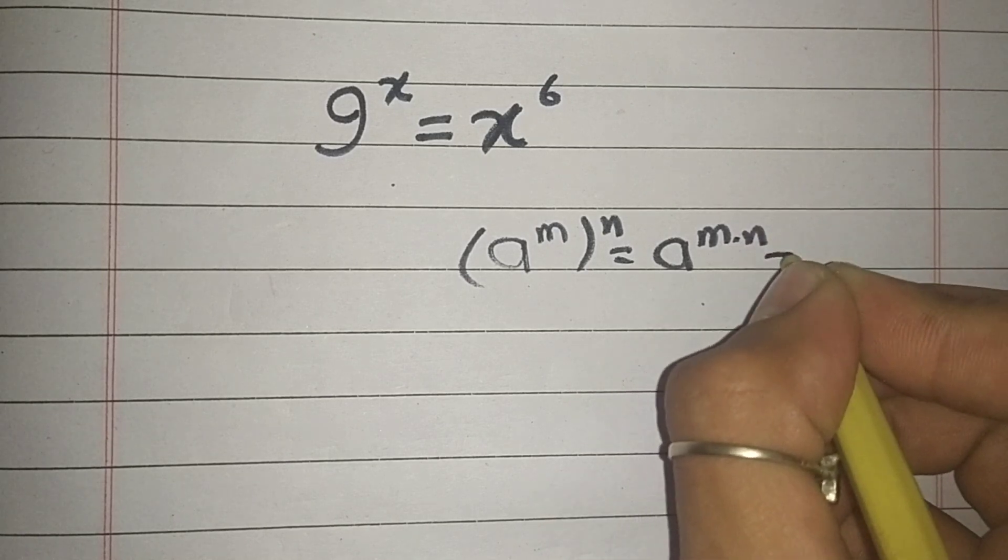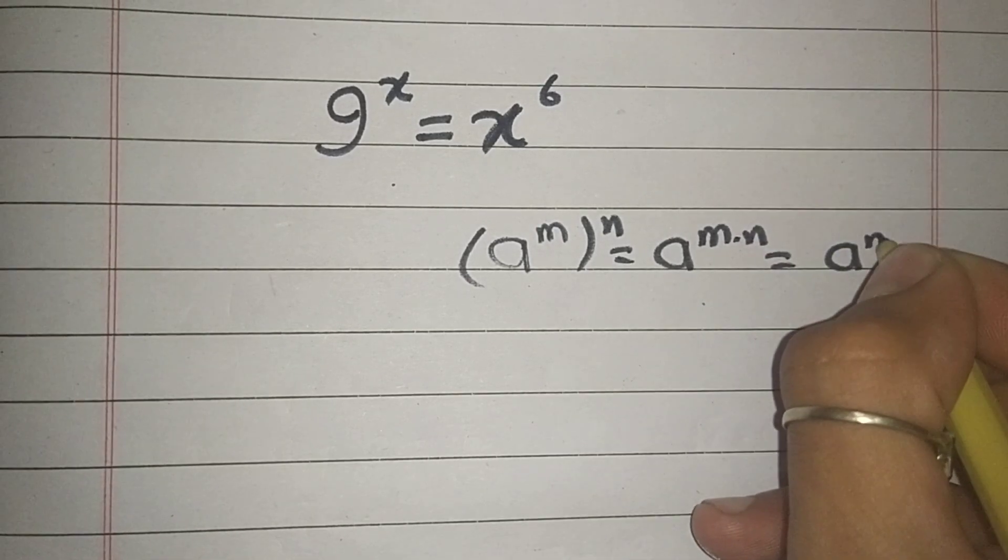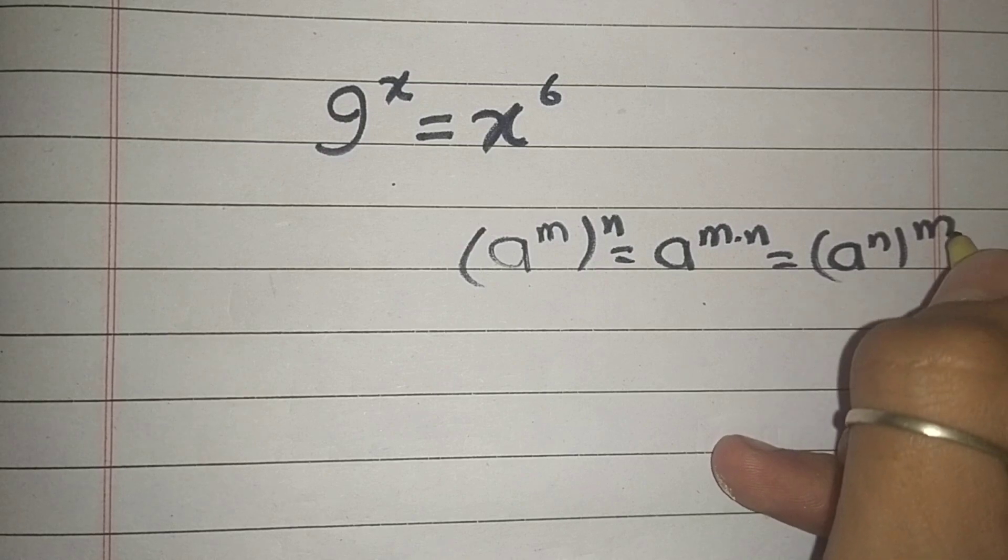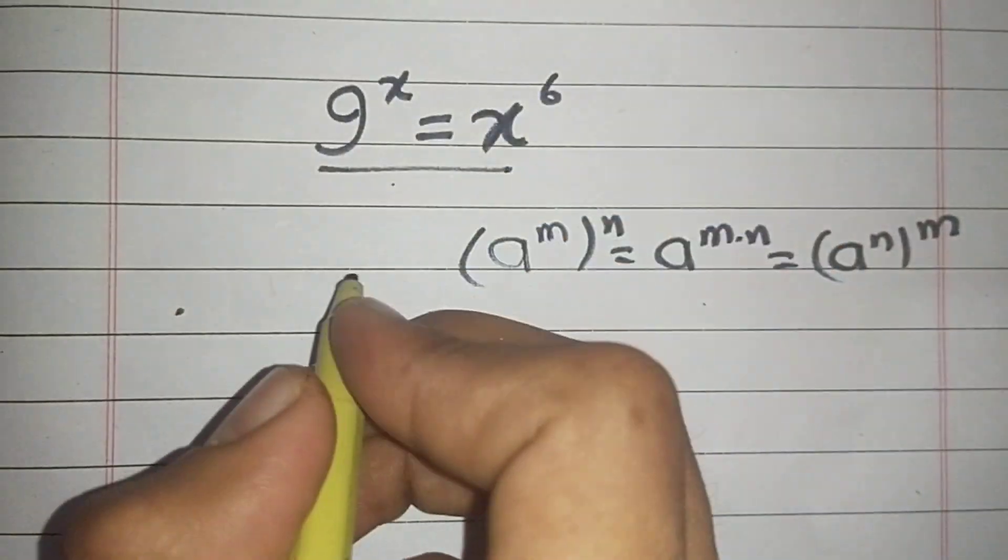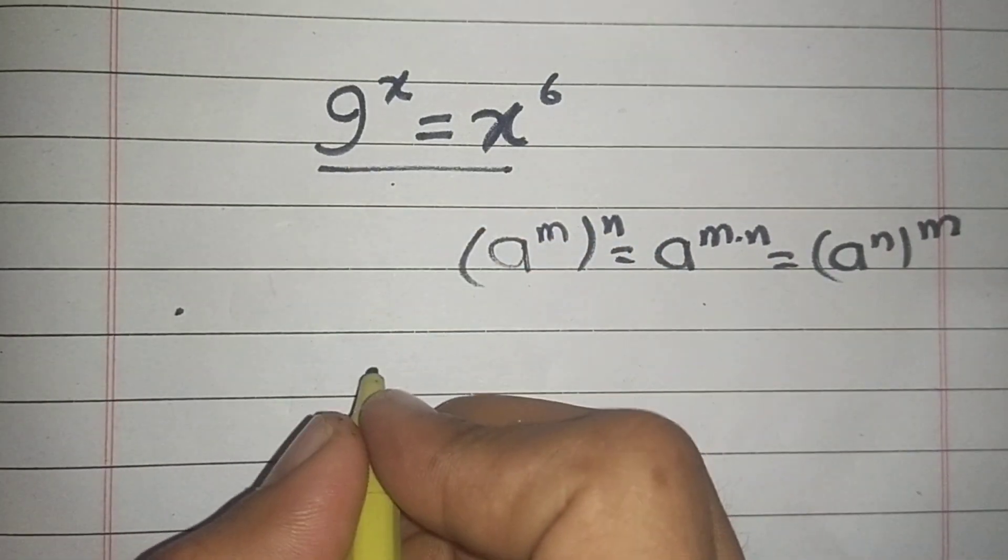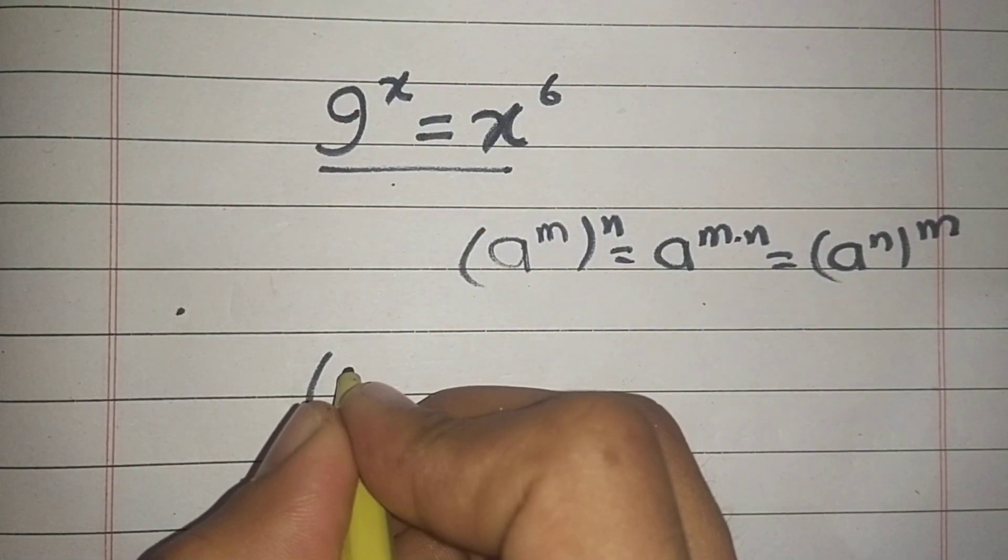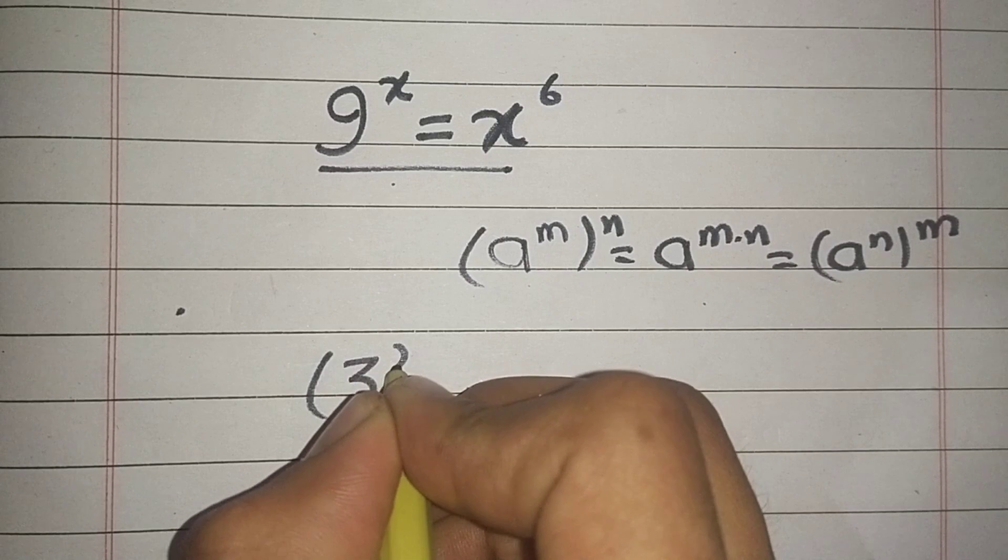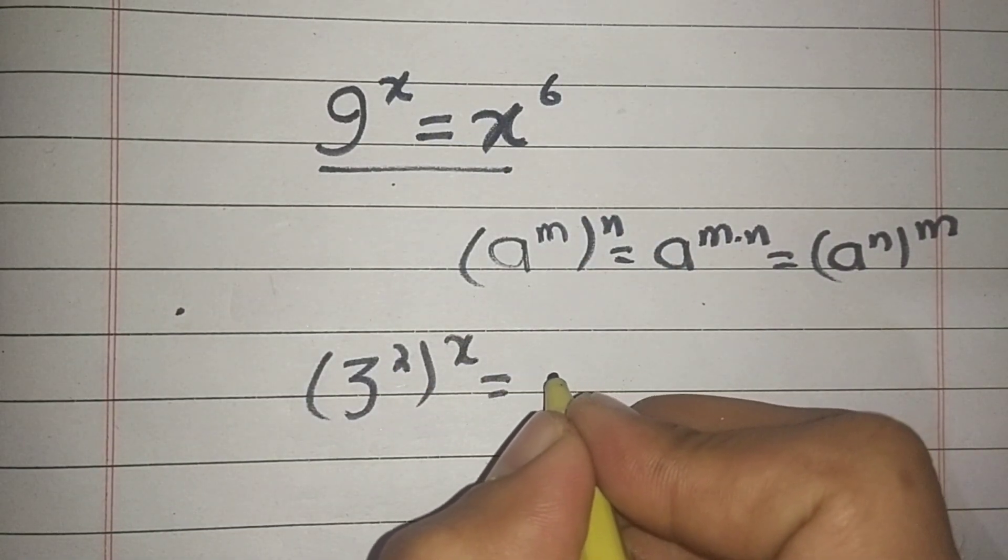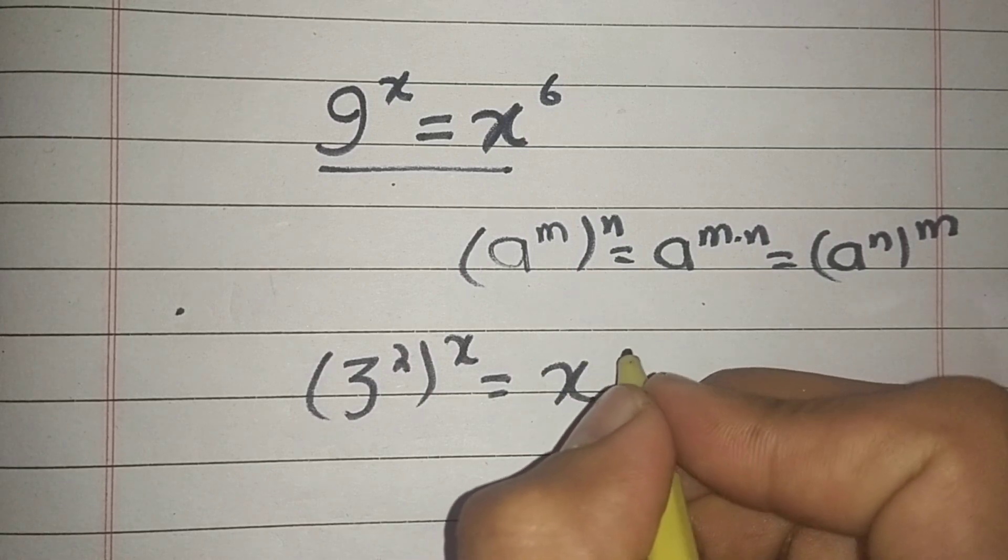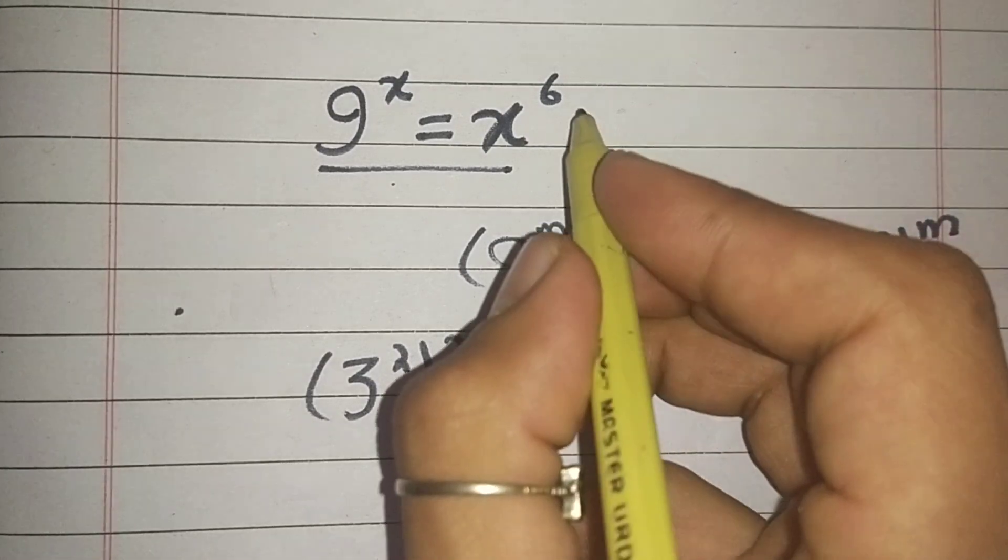Which is equal to a^(m·n), and also equals (a^n)^m. Now we can write this equation. We have 9 here, and 9 equals 3 squared, raised to power x, equals x raised to power...